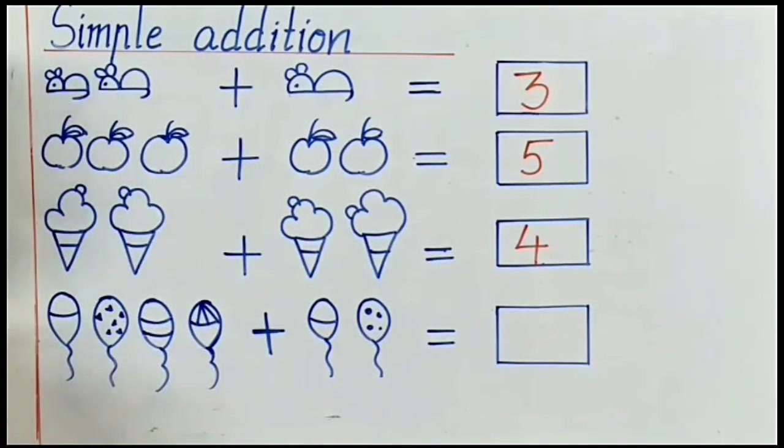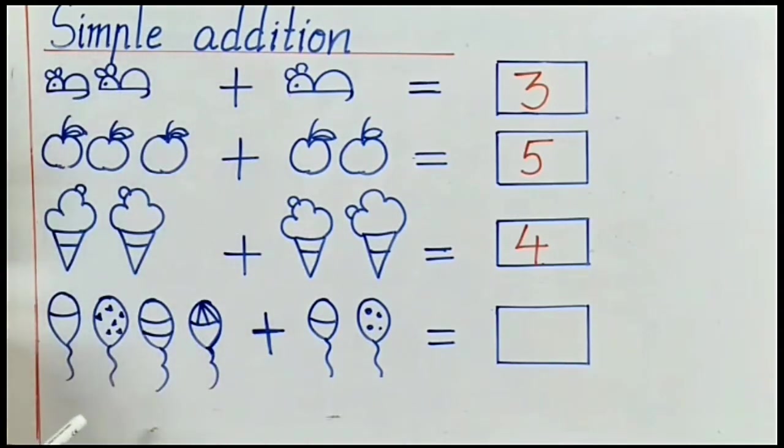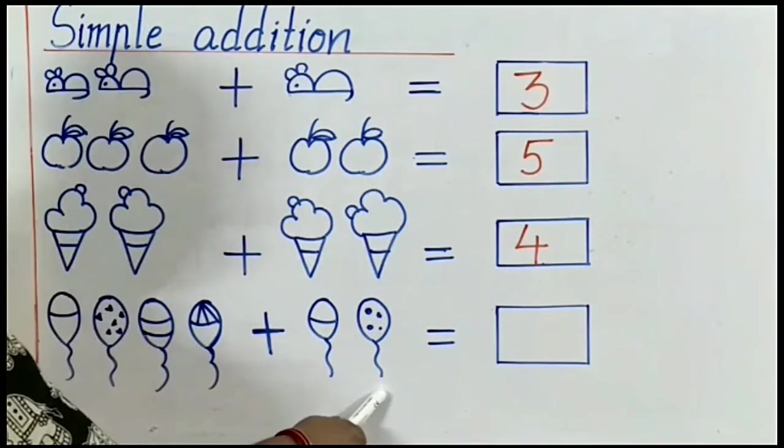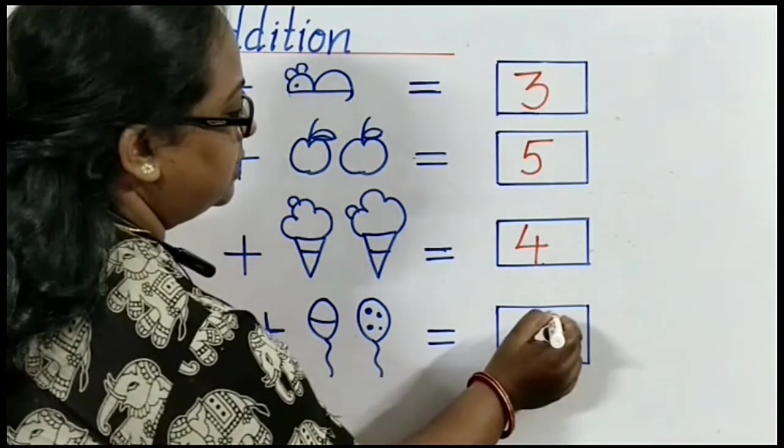Next slide. There are different balloons. You can see, children. Let's count. 1, 2, 3, 4. And that side? 1, 2. Let's count it together. 1, 2, 3, 4, 5, 6. So, all together, how many balloons are there? 6 balloons.